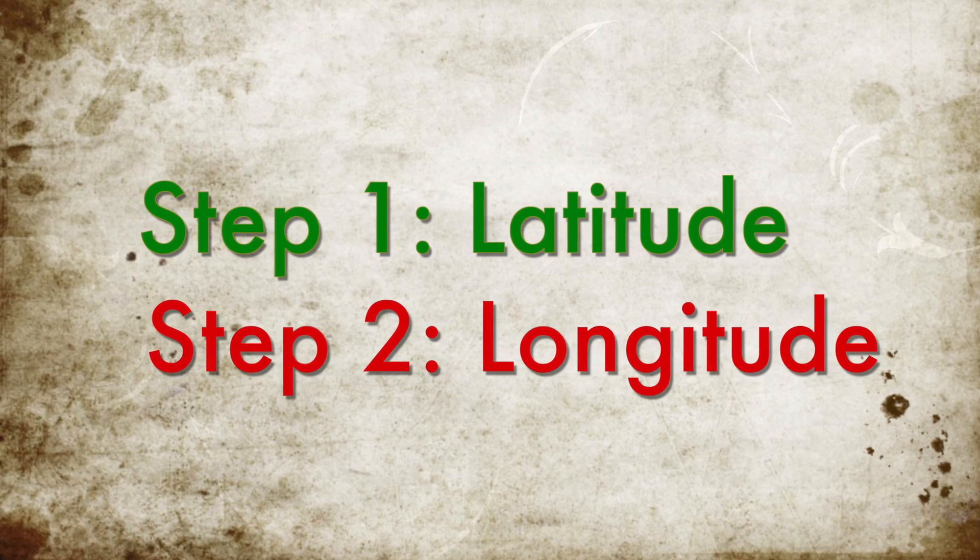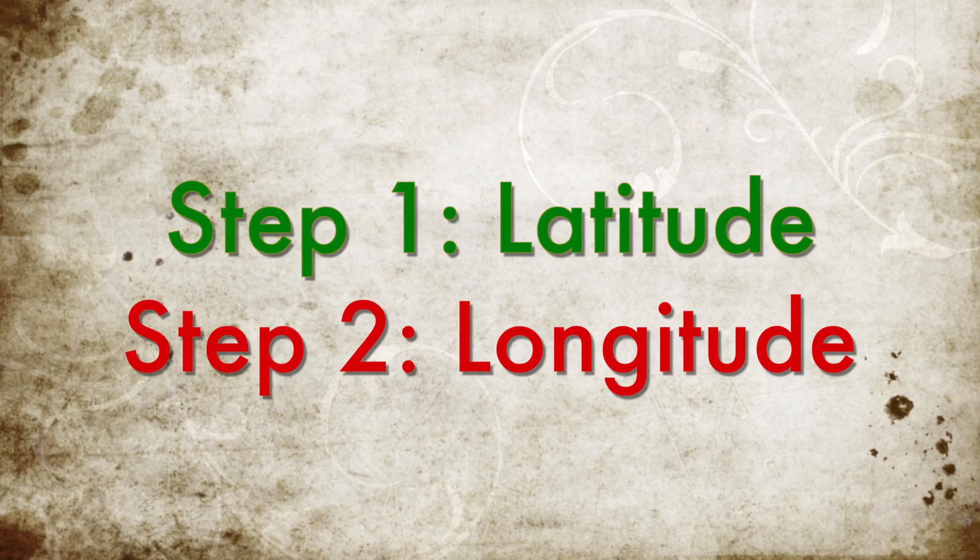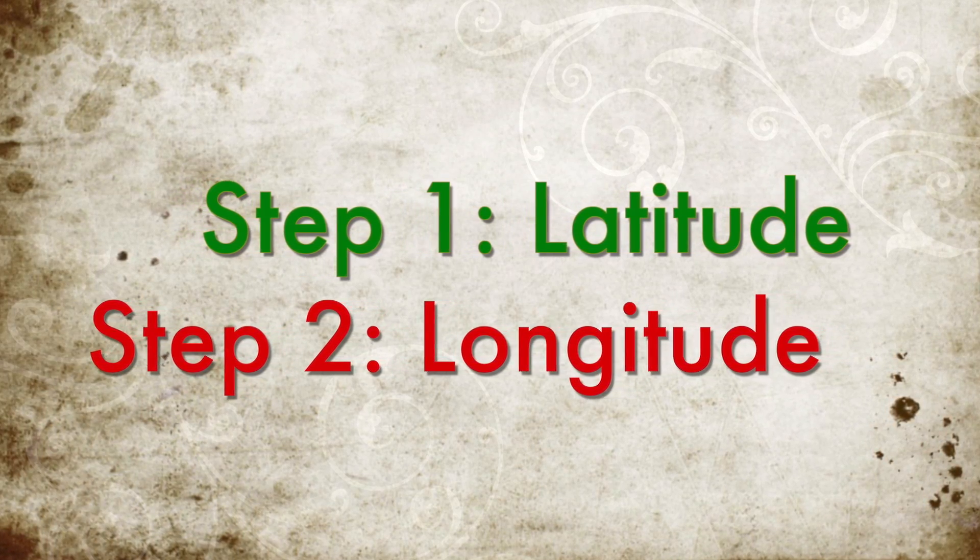So the calculation for sunrise or sunset is a two-step process. First, you must correct for latitude, and second, you correct for longitude.